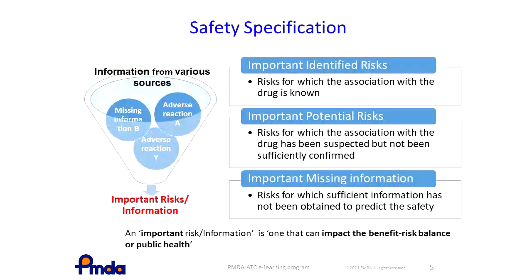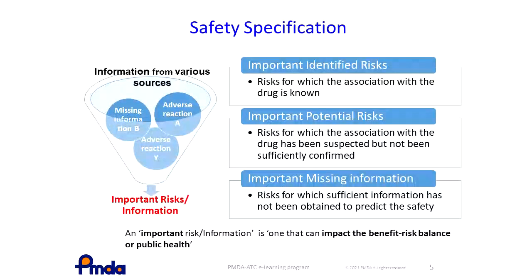Important identified risks are risks for which the association with the drug is known. For example, events whose relationship with the drug is sufficiently confirmed based on non-clinical and clinical data, or events that are frequently reported in post-marketing and whose causal relationship with drug is suggested by temporal relevance. Important potential risks are risks for which the association with the drug has been suspected but not sufficiently confirmed. For example, an event that is suspected as safety-concerned based on non-clinical data but has not been confirmed via clinical data, or the adverse effect that is well known by class effect but is not reported based on clinical data of the drug.